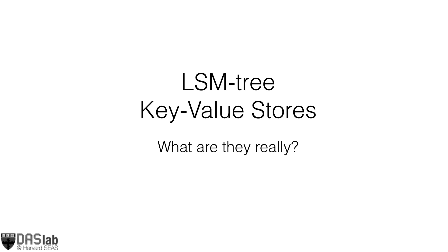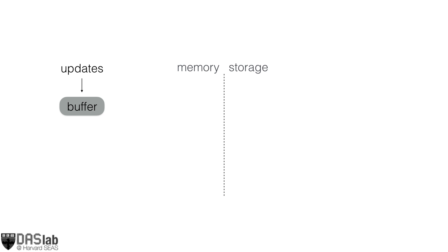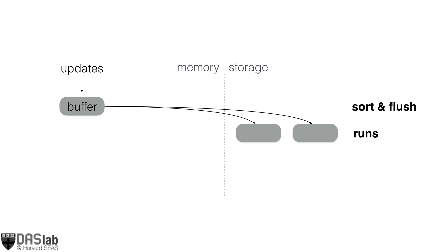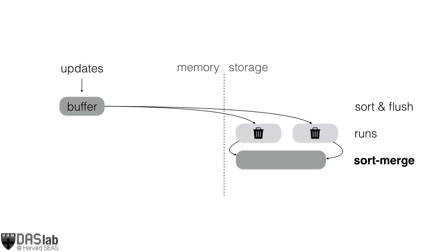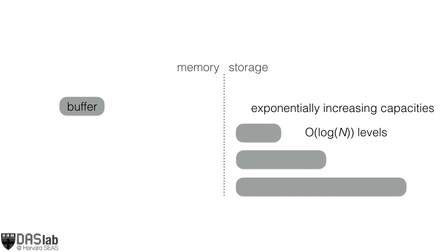So, these LSM tree-based key-value stores — what do they really look like from the inside? The main design principle is to avoid accessing secondary storage for every single update or insertion, and instead to buffer all updates and insertions in main memory. Whenever this buffer fills up, we sort all of its entries by key and flush them as sorted arrays into secondary storage. To avoid accumulating runs indefinitely, we occasionally merge them in the background using sort-merge operations. Because we always merge runs of similar sizes at the same level, we end up with a logarithmic number of runs organized into a logarithmic number of levels, and these levels have exponentially increasing capacities.